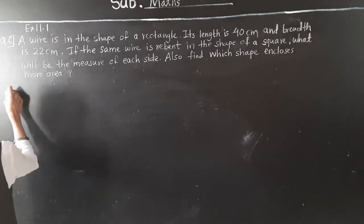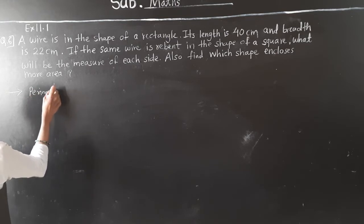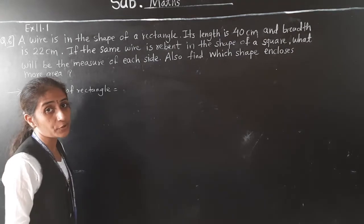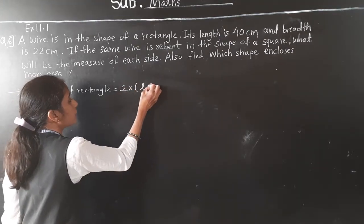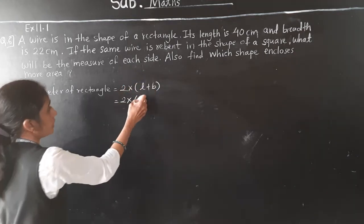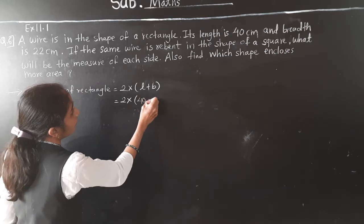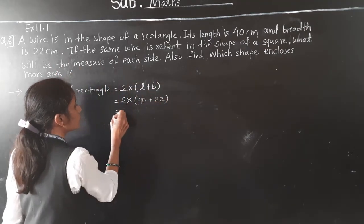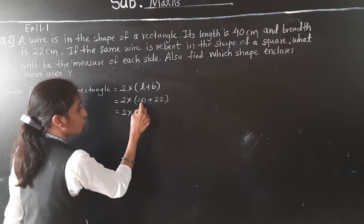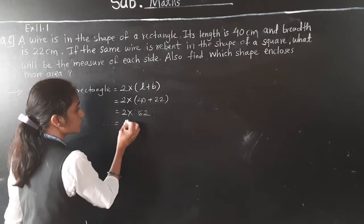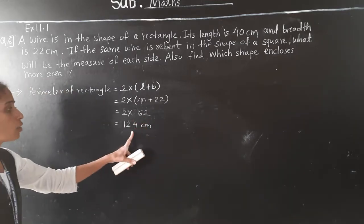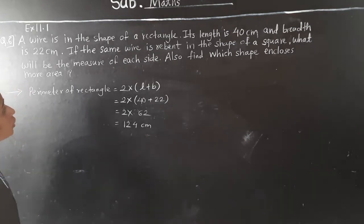Let's find the perimeter of the rectangle. Formula: 2 multiplied by bracket length plus breadth. So 2 multiplied by bracket 40 centimeter plus 22 centimeter. 40 plus 22 equals 62. Then 2 into 62: 2 twos are 4, 2 sixes are 12. Perimeter of rectangle equals 124 cm.